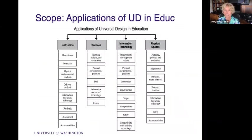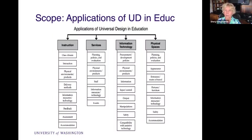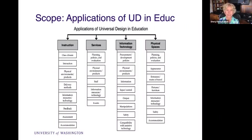Applications of universal design in education include instruction, information technology, and physical spaces. One area we won't talk about is services, but universal design can be applied to career services, internship programs, and so on. For each type of application, we have checklists in our Center for Universal Design. In the case of instruction, we have class climate — how can you make your climate welcoming by learning students' names, taking an interest in them? I have a little bulletin board in my online class where students can optionally share information about themselves.